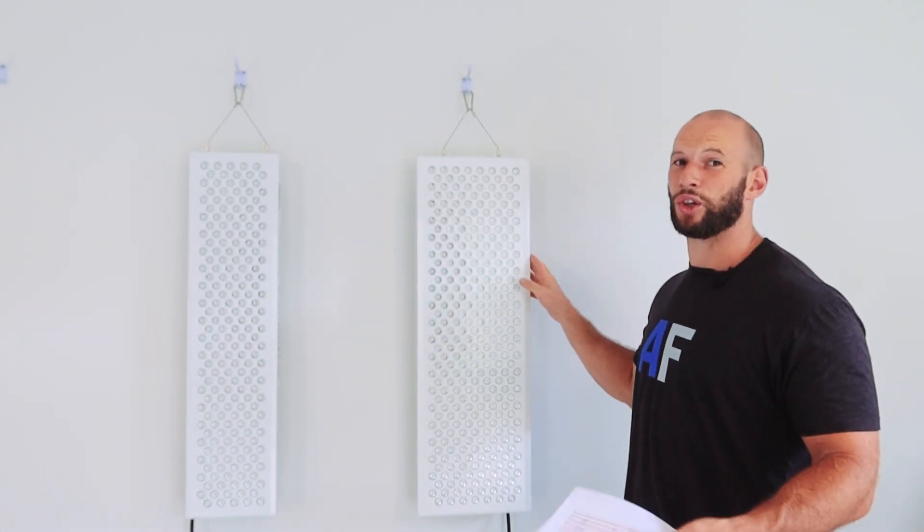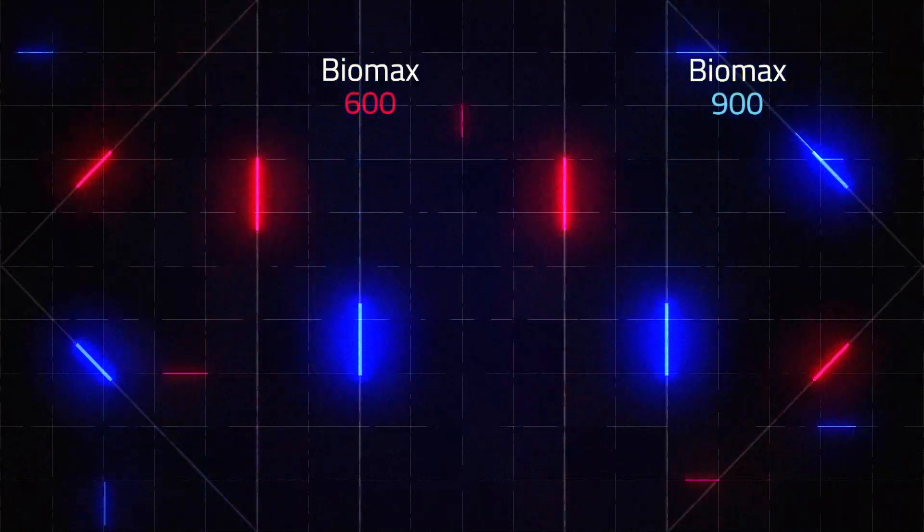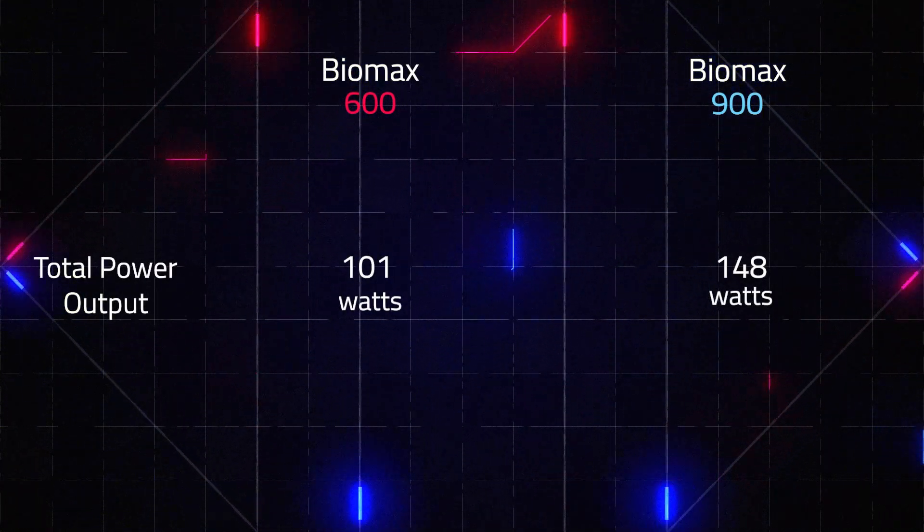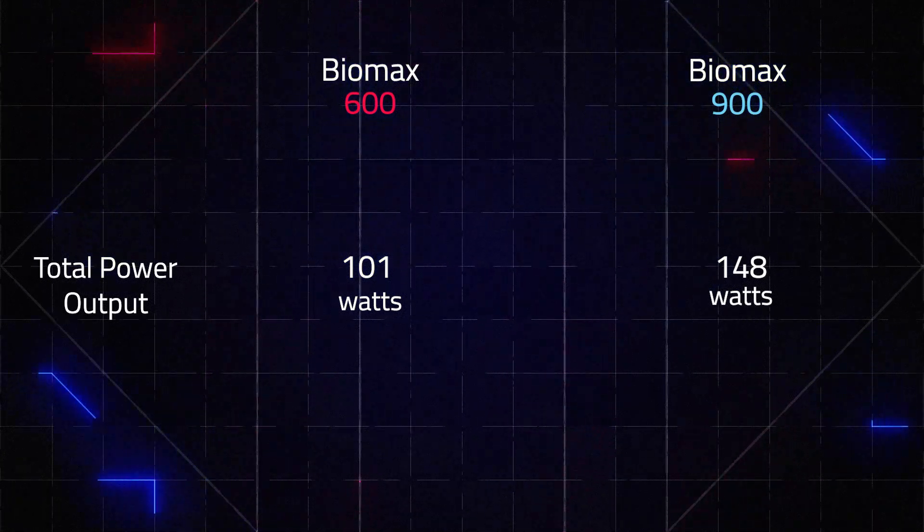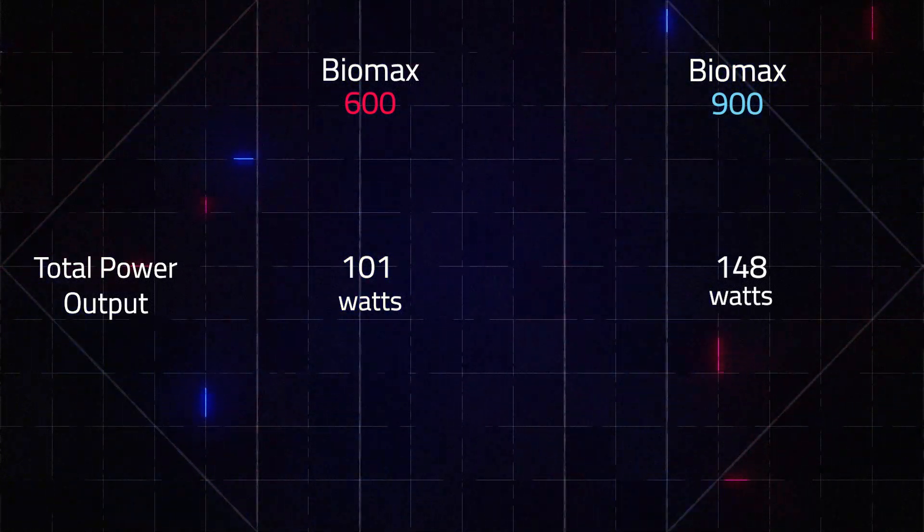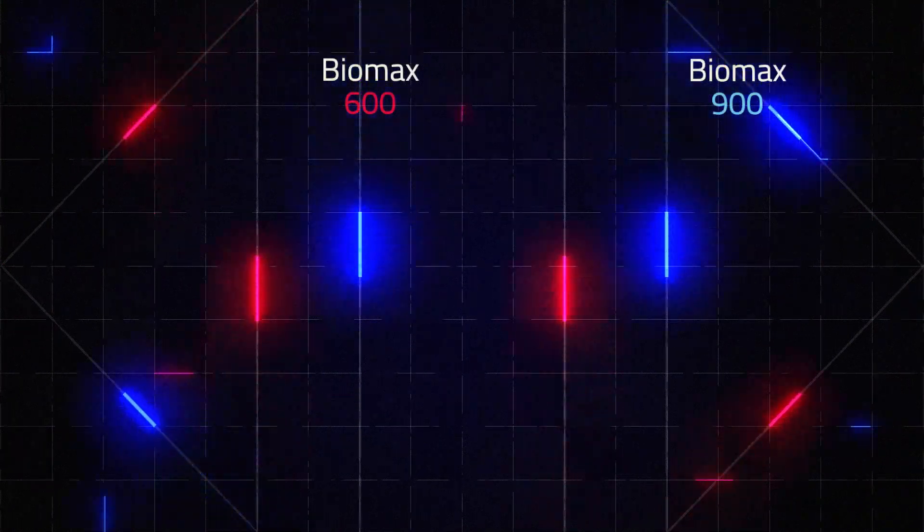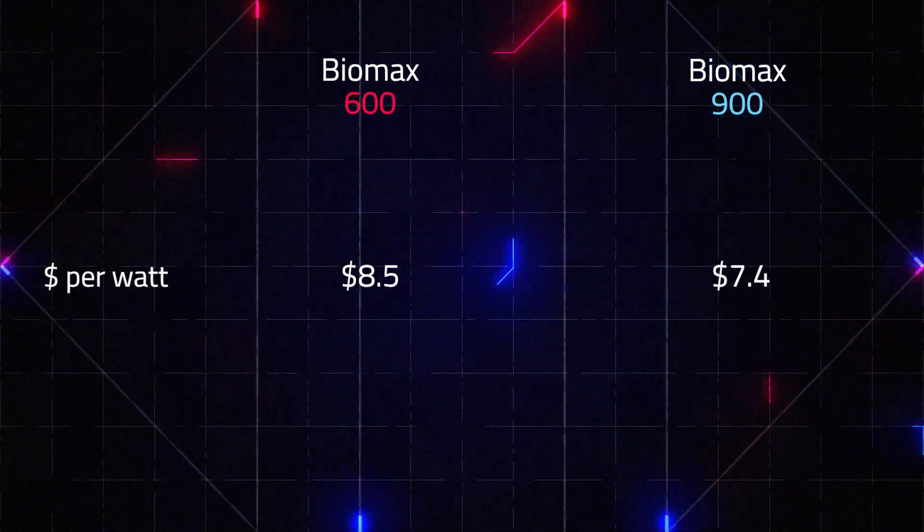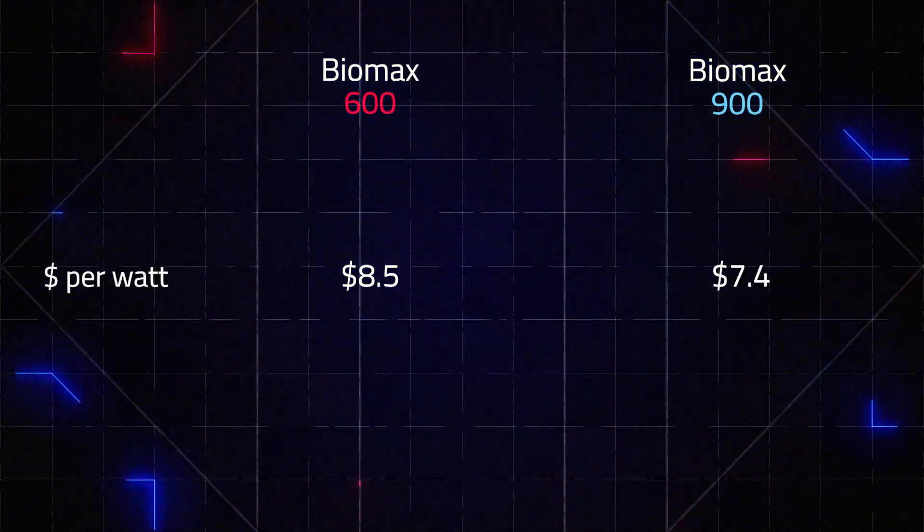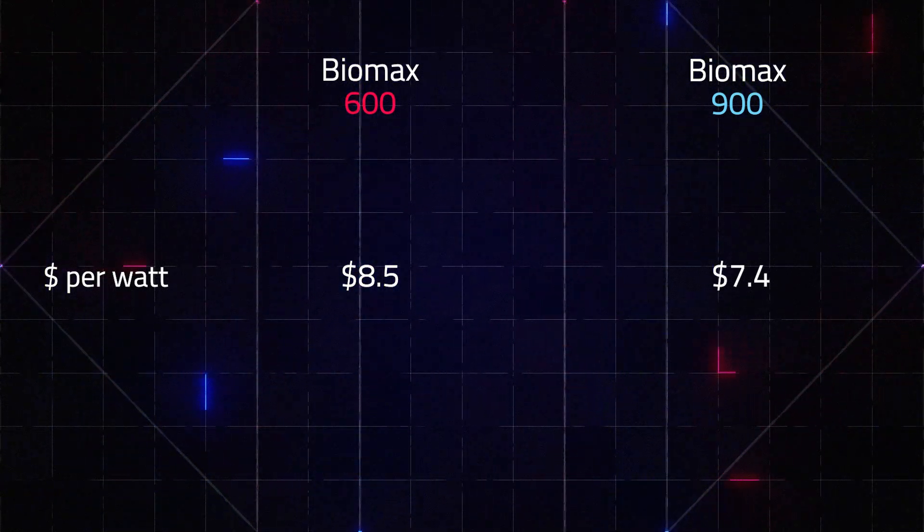From a total wattage output, the Biomax 600 is putting out 101 watts, and that's at 6 inches. The 900 is putting out 148 watts, which is massive. That's the highest wattage figure for any body panel I've tested to this day. Now that we've got the price figures and the wattage figures, we can actually do a dollar per watt figure. So the dollar per watt for the 600 is $8.50, and the dollar per watt figure for the 900 is $7.40, which again is the best figure I've tested in all my years testing body panels.